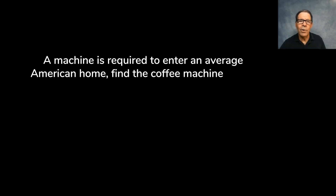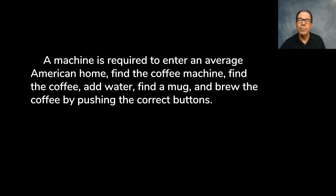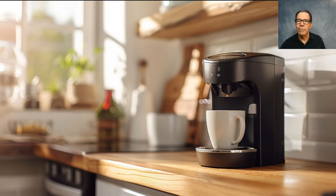Here's the ultimate test — it's the Wozniak coffee test. A machine is required to enter an average American home, find the coffee machine, find the coffee, add water, find a mug, and brew the coffee by pushing the correct buttons. I am very sorry to report that this task has not yet been completed. And that's a big gap for AI. Conclusion: no AGI yet.